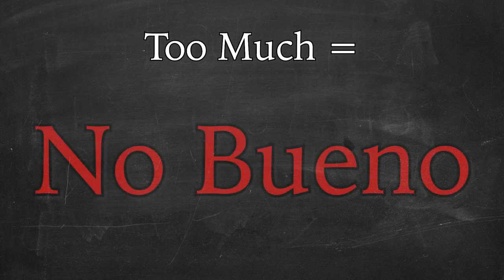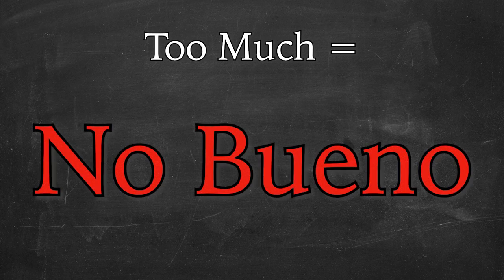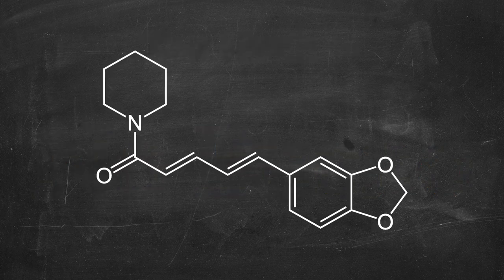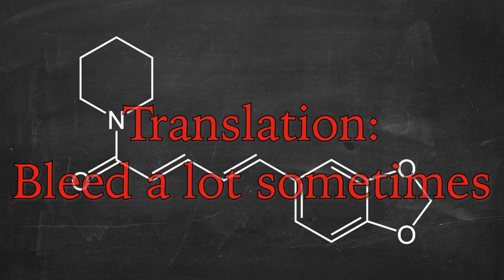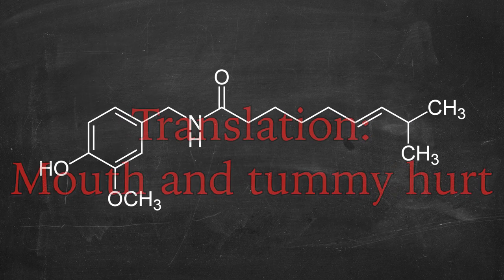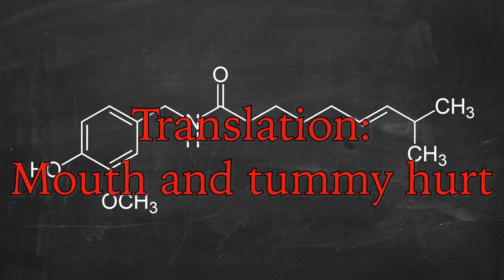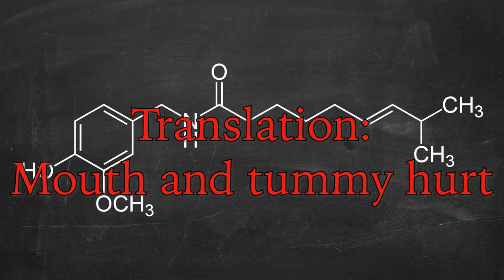However, both can cause various health issues when eaten in too high a concentration. Piperine is contraindicated in the use of anticoagulants, meaning that it can make you bleed really bad in very high quantities. Capsaicin, aside from making things inedible if they're too spicy, can cause nausea, vomiting, and stomach ulcers if you consume too much.